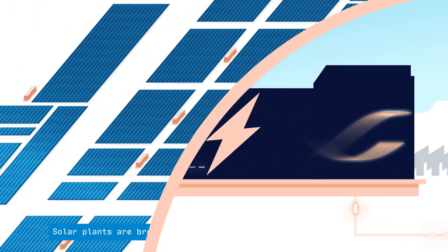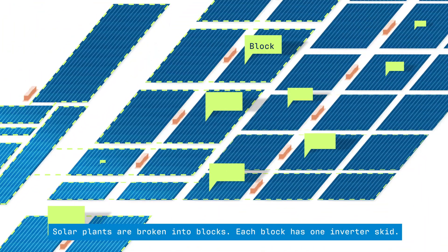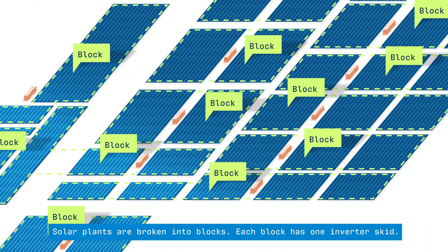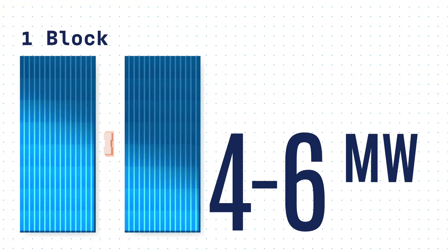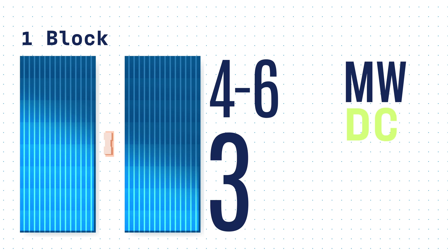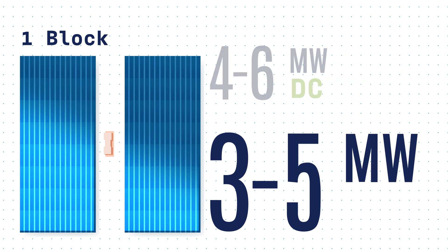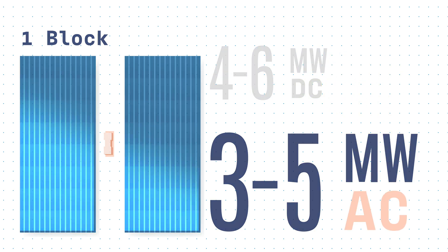Solar plants are broken into blocks. Each block has one inverter skid. Usually, a block provides 4–6 megawatts of DC and 3–5 megawatts of AC power.